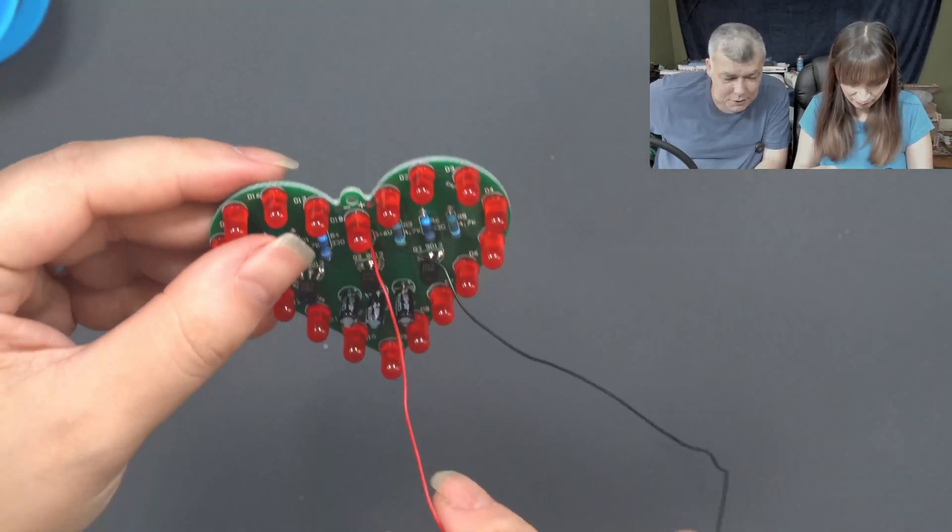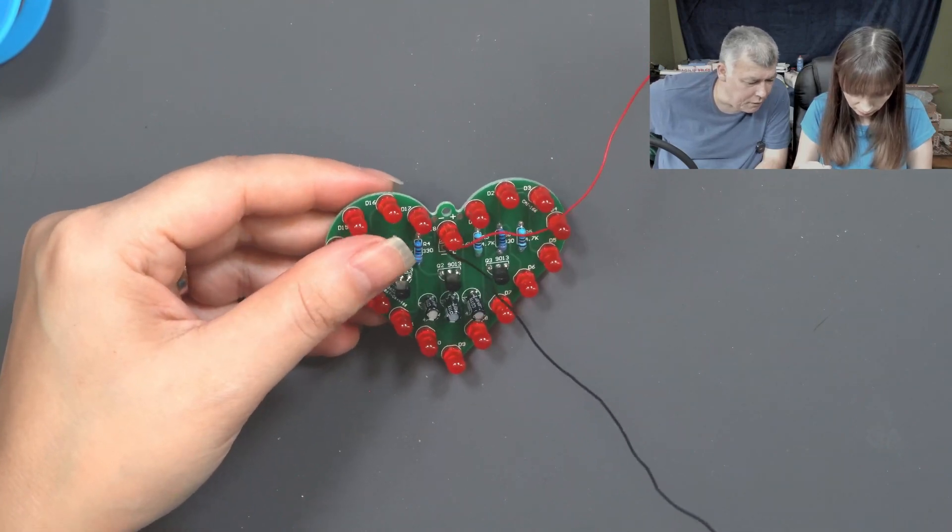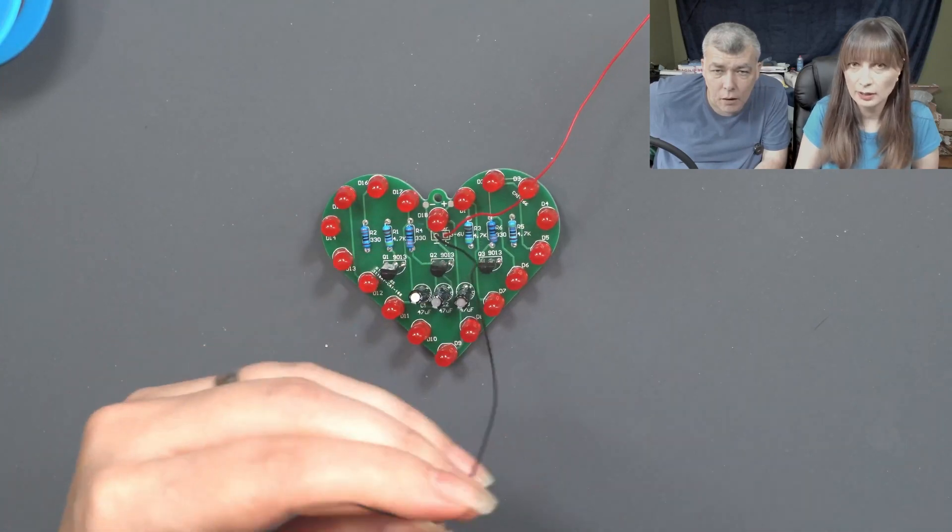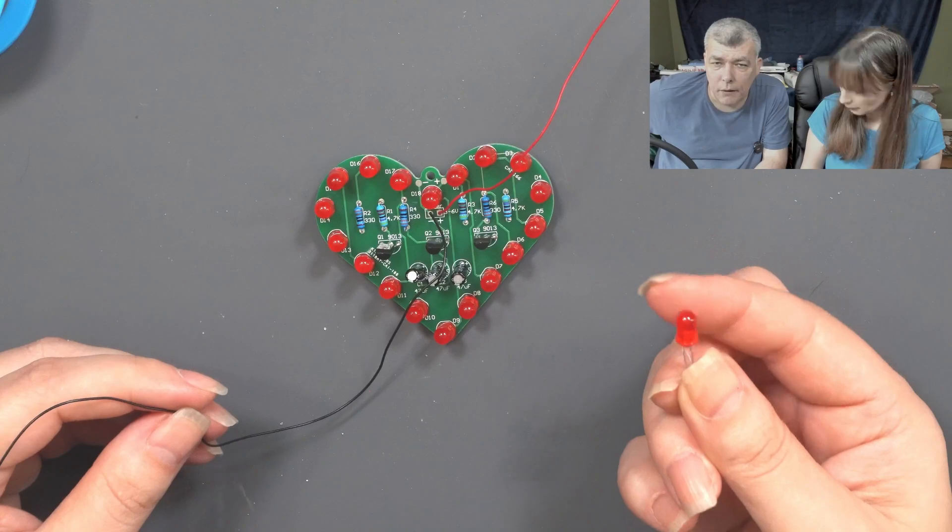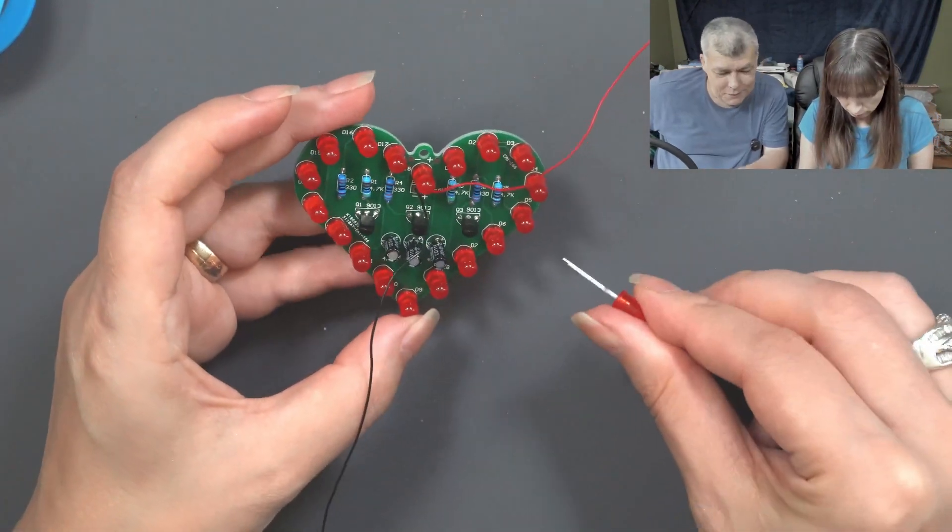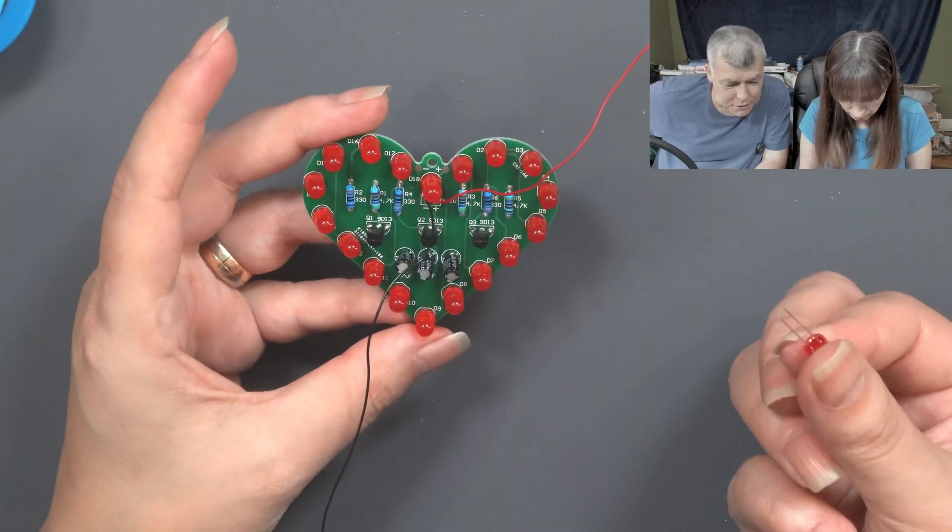I think it's good. Then it's time for testing. Wait, there's one more LED there. It's not for spares? I thought it's for spares. There's one more LED, but I thought it's for spares. Probably. Because it's not. Where should I put it? I understand.